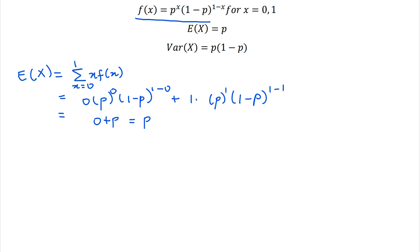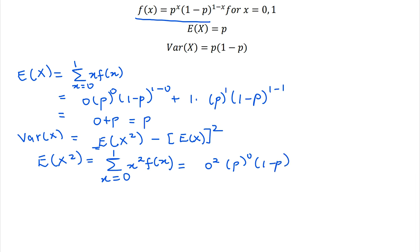So what about the variance? In order to calculate the variance, we say var of x becomes the expectation of x squared subtract the expectation of x all squared. But this term over here becomes the expectation of x squared, f of x from x equals 0 to x equals 1. And this over here becomes 0 squared multiplied by p to the exponent 0, 1 minus p to the exponent 1 minus 0 plus 1 squared p to the exponent 1, 1 minus p, 1 minus 1. And this also becomes p.